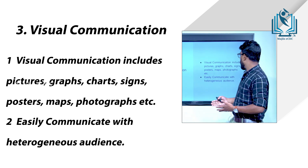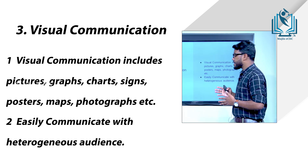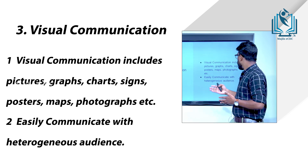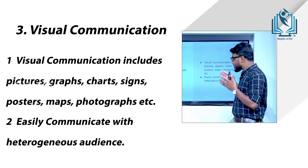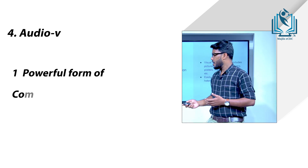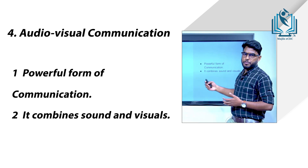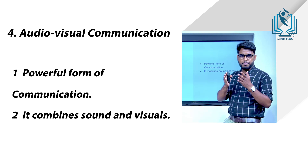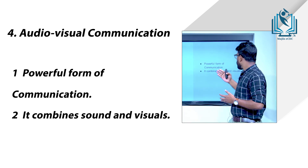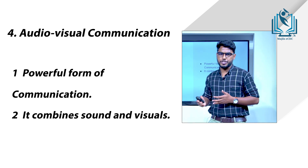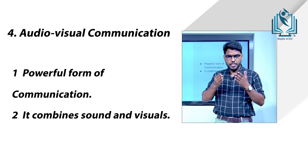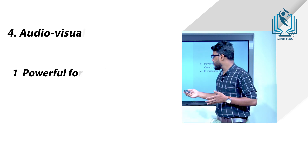The next one is visual communication. Visual communication includes pictures, graphs, charts, signs, posters, maps, photographs, and the like. It can easily communicate with a heterogeneous audience. The next is audiovisual communication, which is the most powerful way of communication. It combines sound and visuals. Examples include television and film, which are powerful forms of audiovisual communication.